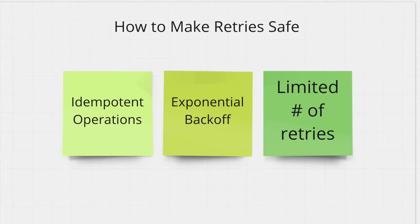The last thing to keep in mind is to limit the number of retries. You don't want service A to retry indefinitely, which would mean service A stays stuck on this one request. Instead, you want to retry a fixed number of times — let's say three to five times. And if the request is still failing, that means service B is down for serious reasons and you should just move on to the next request or use some kind of default value as a response.